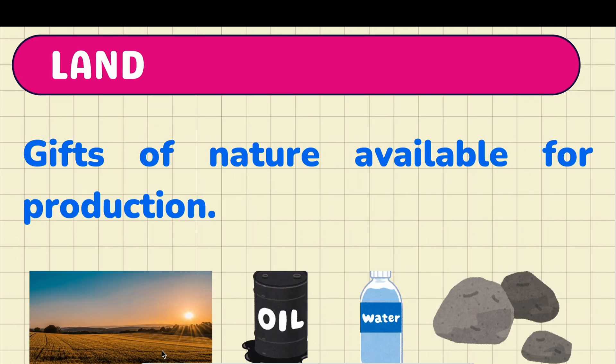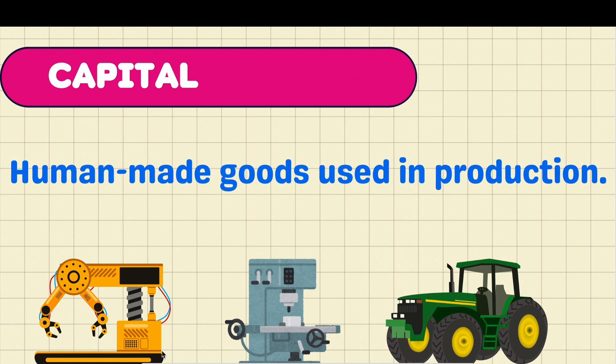Land does not only include the surface in its literal meaning — it also includes what is above and what is below the land. Basically, it includes all the natural resources used in the production process. If you use oil, water, stone, or other natural materials in your production process, they are categorized under land.